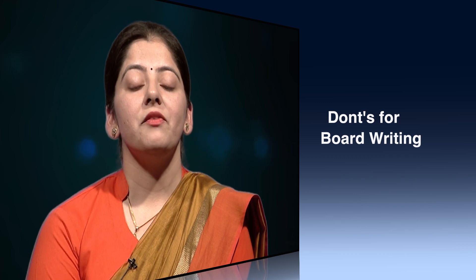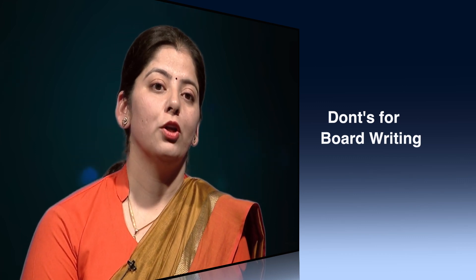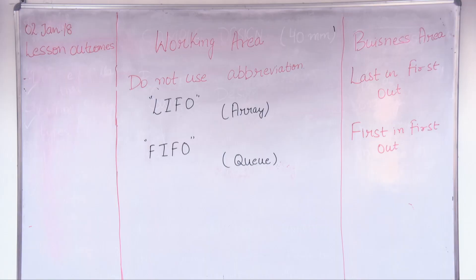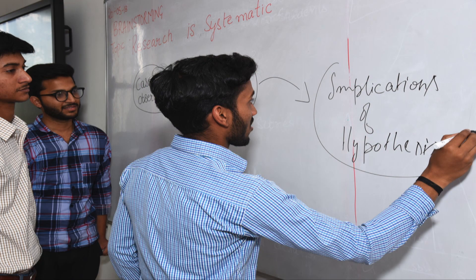These are certain do's that need to be followed. Now the discussion will be on what are the various don'ts while using the board. If the teacher is using an abbreviation not known to the students, the abbreviation needs to be mentioned in the business area of the board. Never use the corners of the board, as it affects the visibility of students sitting in the corners of the class.